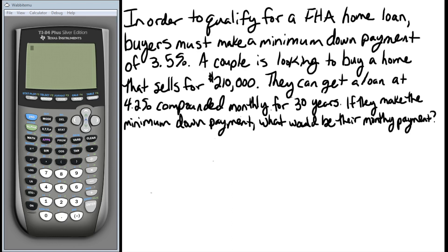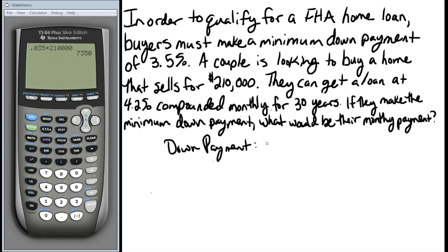In this problem we're dealing with purchasing a home and getting a loan for whatever the balance is in order to pay off that loan over 30 years. The first thing we need to do is determine how the minimum down payment is going to affect how much the loan is actually going to be for. So we need to find what 3.5 percent is of the purchase price. Using a calculator: 0.035 times two hundred and ten thousand gives us a minimum down payment of seven thousand three hundred and fifty dollars.